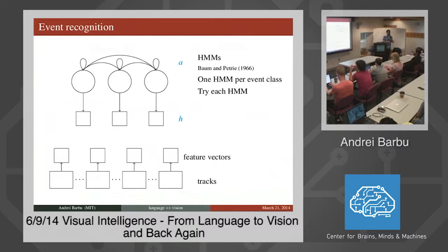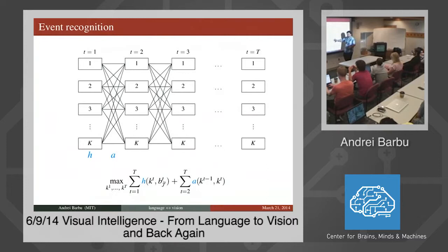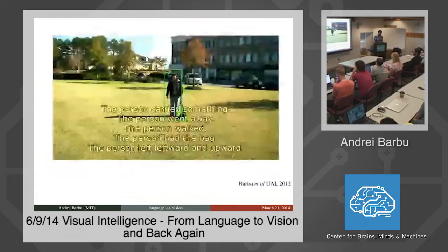If you want to recognize what happened — pick up, approach, fly — you just try every single word. Recognizing something with a hidden Markov model is extremely similar to how the tracker works. You arrange every state of the model at every frame in columns of a lattice. Every node tells you how confident you are that you're observing what the state wants to see. Every link gives the probability of jumping between states. You maximize the linear combination of observation confidence and model dynamics confidence, again using dynamic programming.